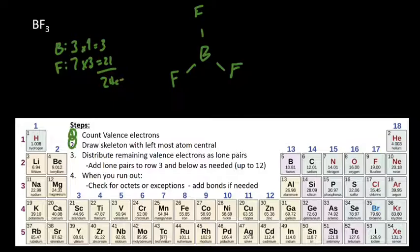Now I'm going to distribute the remaining electrons. So I have six distributed in those three bonds. I add lone pairs to each fluorine until it has an octet. I continue around all three fluorines, adding lone pairs until I've used all 24 electrons.